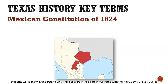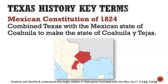The Mexican Constitution of 1824 — we've talked about this before. The key thing to remember here is that it was a plan of government, and in that plan it combined Texas with the Mexican state of Coahuila to make the state of Coahuila y Tejas, or Coahuila and Texas.